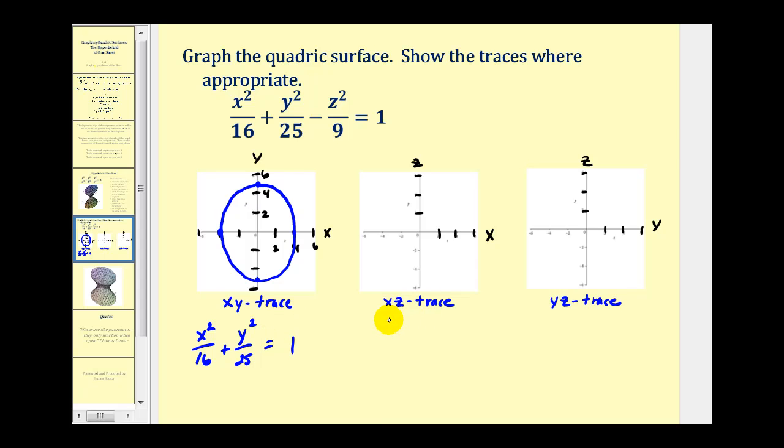Now let's take a look at the xz trace. We'll set y equal to zero. That will give us x squared over sixteen minus z squared over nine equals one. We know from our study of conic sections this is a hyperbola.